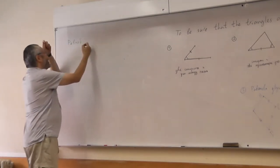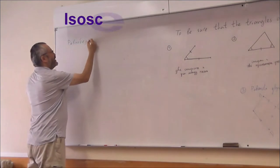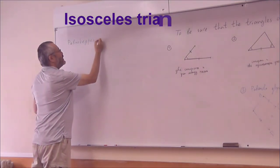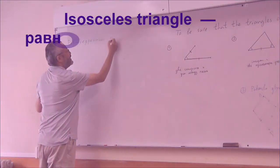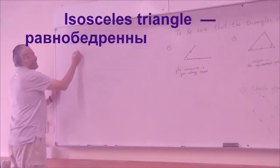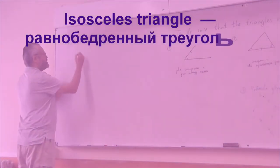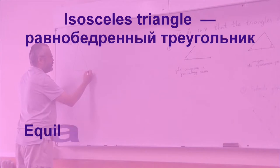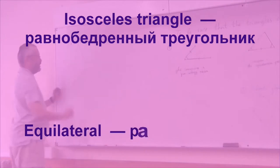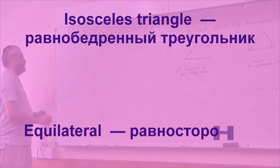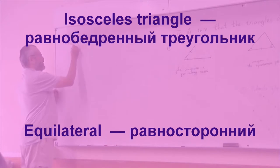In English it's isosceles. In Russian it's Ravnagetri. Ravnagetri means that two sides of a triangle are equal, called A, B and C. And this side is called Asnavaini.